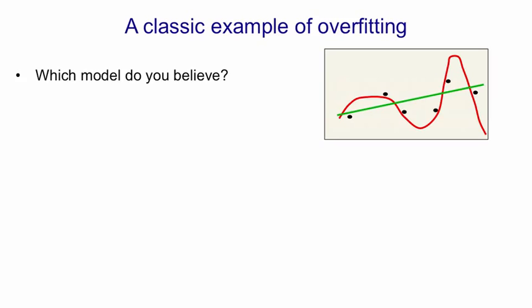And so which model do you believe? The model that has six coefficients and fits the data almost perfectly, or the model that only has two coefficients and doesn't fit the data all that well?